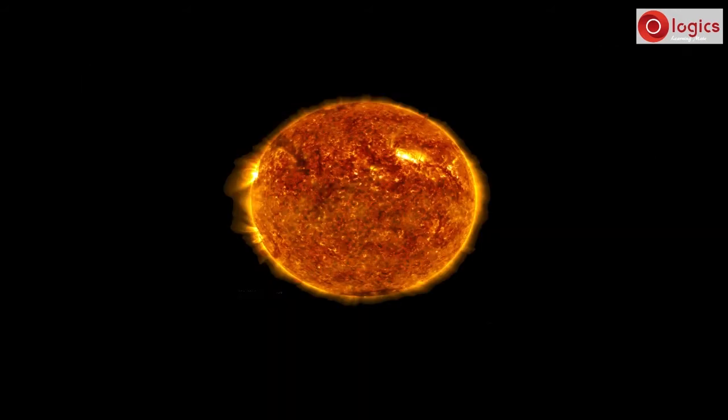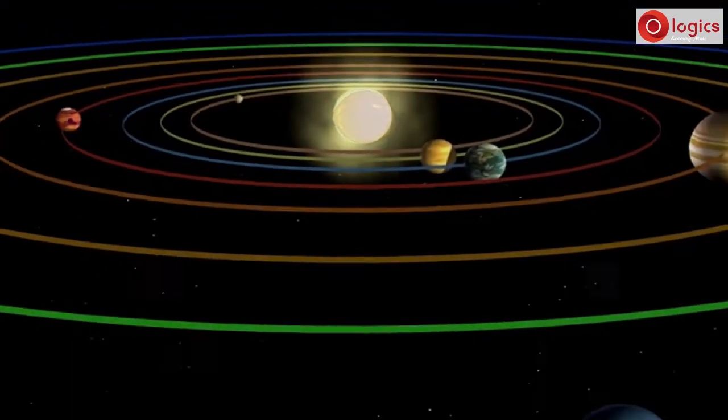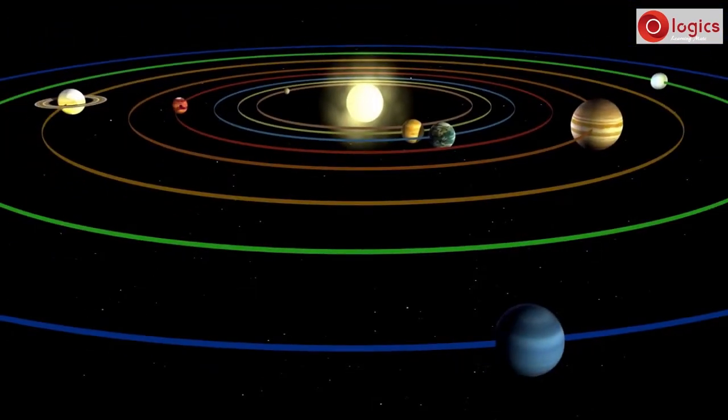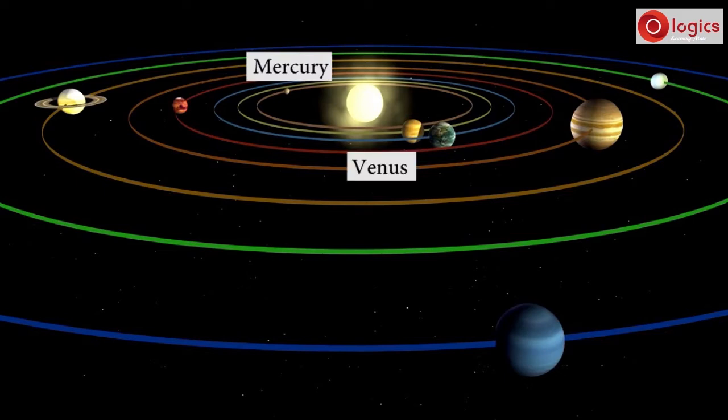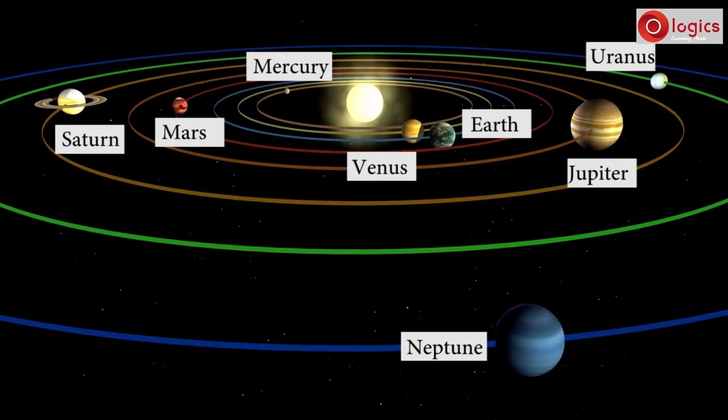What are the other planets apart from Earth, those revolve around the sun? There are eight planets that revolve around the sun: Mercury, Venus, Earth, Mars, Jupiter, Saturn, Uranus, Neptune. This is the solar system.